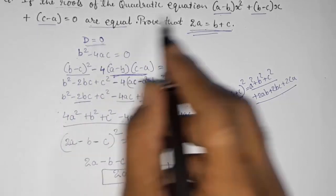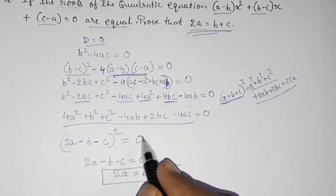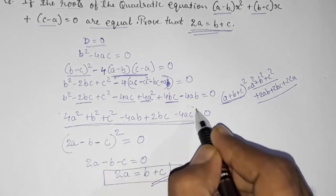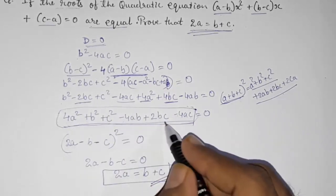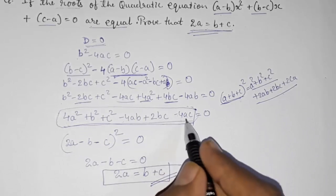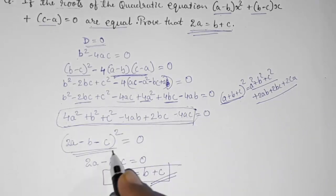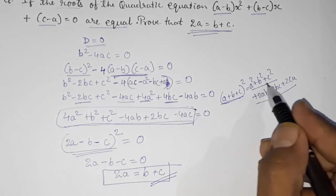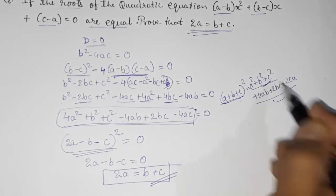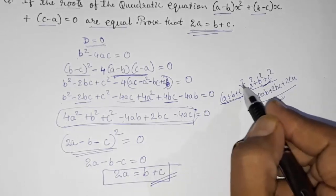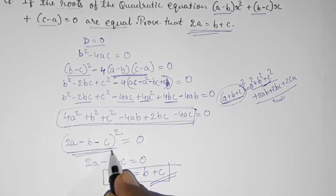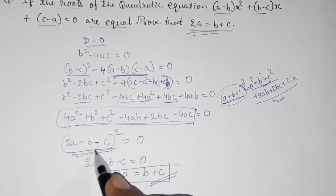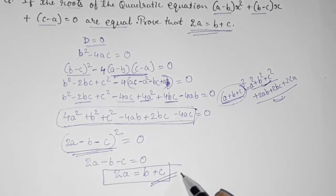So from this you directly get the answer. You have to use D equals 0, substitute b squared minus 4ac, and keep the values. If you don't know the identities learned in 9th standard, you won't be able to solve it. We used the identity to convert the expression and kept the negative sign carefully.